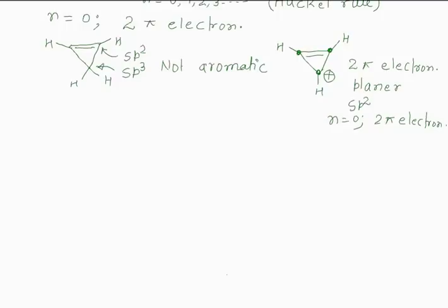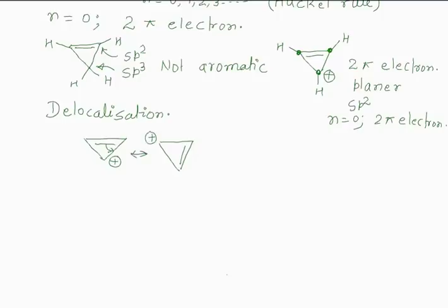One more condition that is generally not written is delocalization — the compound must have delocalization. In this case we can write 3 resonating structures for the cyclopropenyl cation by shifting bond pairs around the ring. So delocalization is present, and this compound is aromatic — it is the smallest aromatic system.